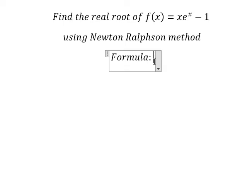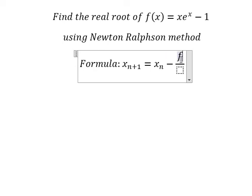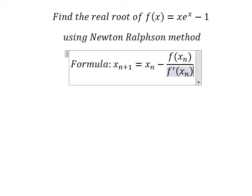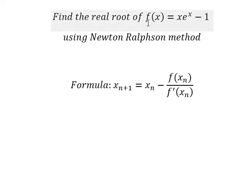That is about x_{n+1} equals to x_n minus f of x_n divided by f prime of x_n. Now we need to find first the derivative of f.